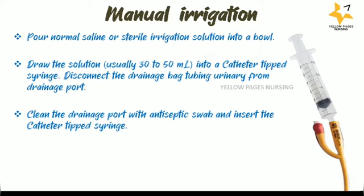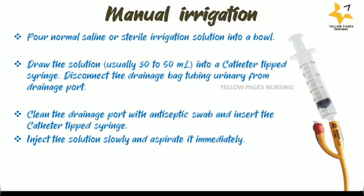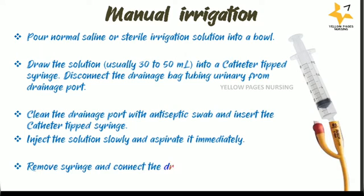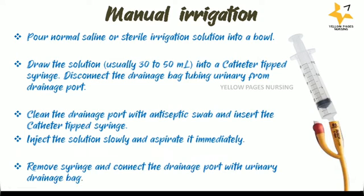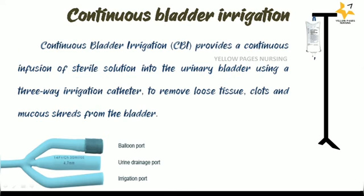Inject the solution slowly and aspirate it immediately. Remove the syringe and reconnect the drainage port with the drainage bag. Manual bladder irrigation can be utilized for long-term catheter patients to prevent recurrent catheter blockage.